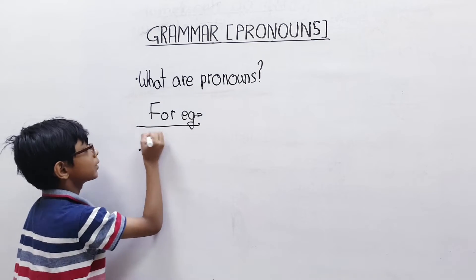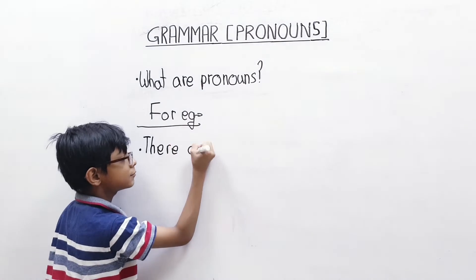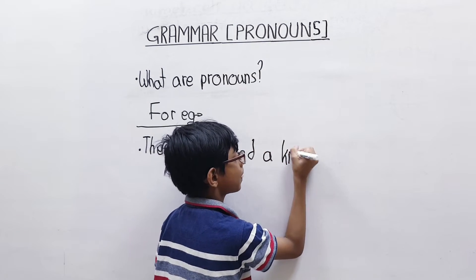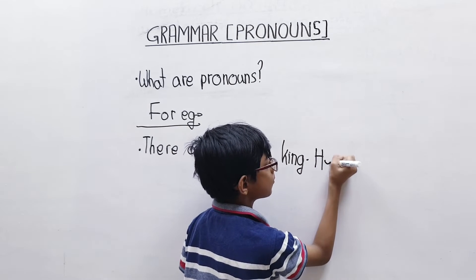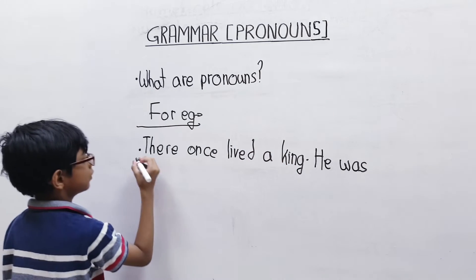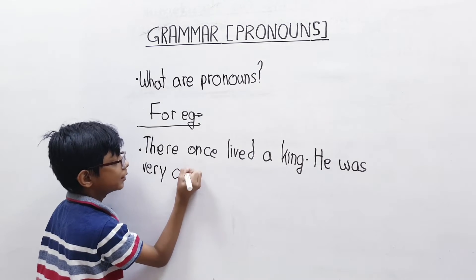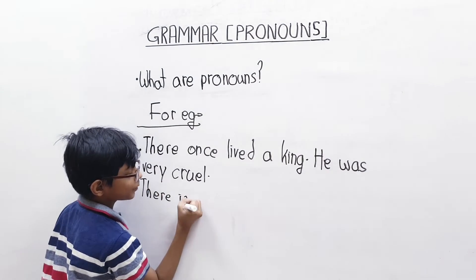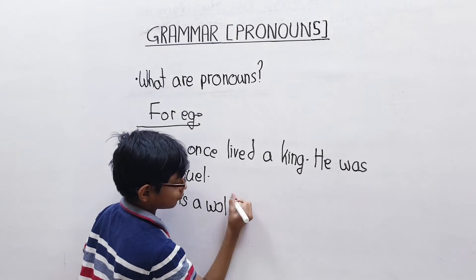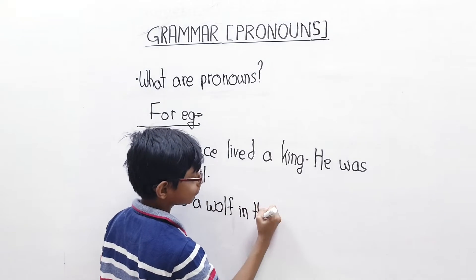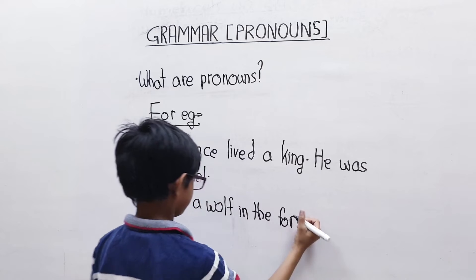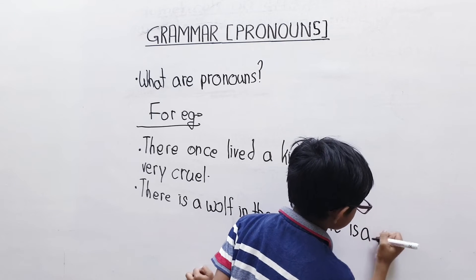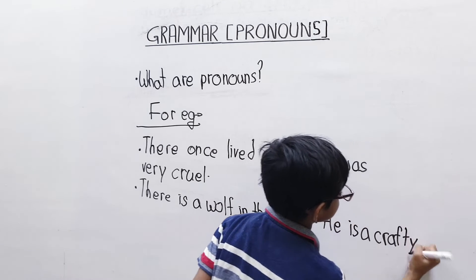there once lived a king. He was very cruel. There is a wolf in the forest. He is a crafty guy.